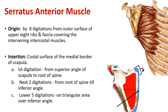The first digitation is attached from the superior angle of the scapula till the root of the spine, present on the dorsal surface of the scapula. The next 2 digitations are attached from the root of the spine till the inferior angle of the scapula. The remaining 5 digitations are attached on the triangular area over the inferior angle.